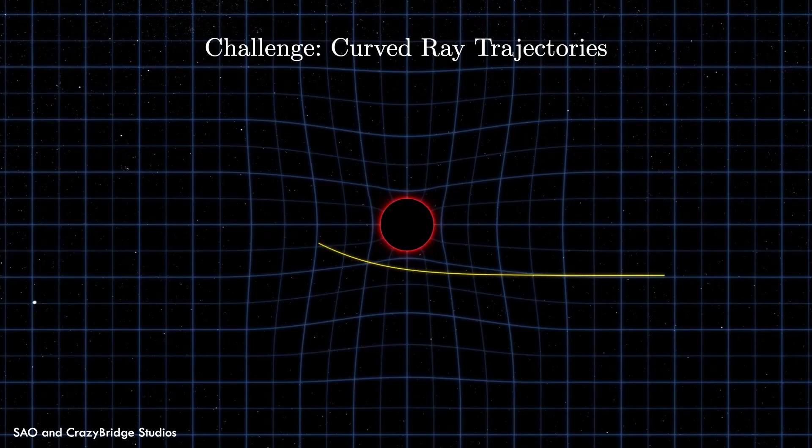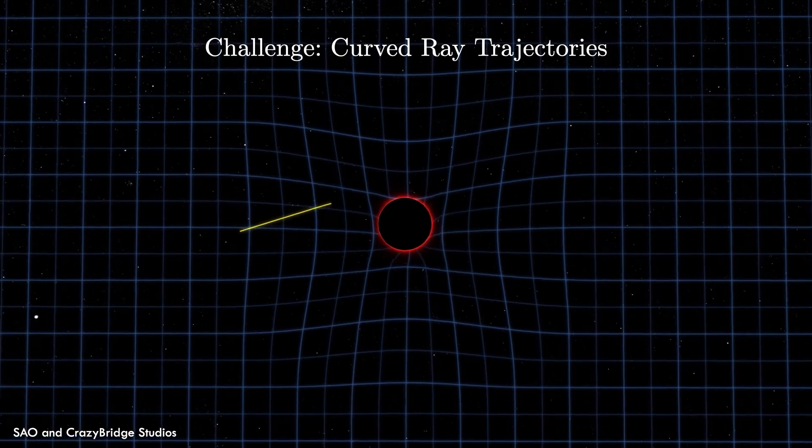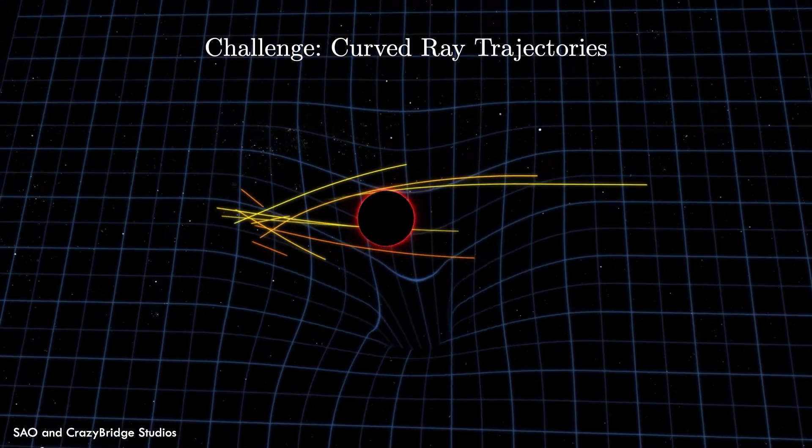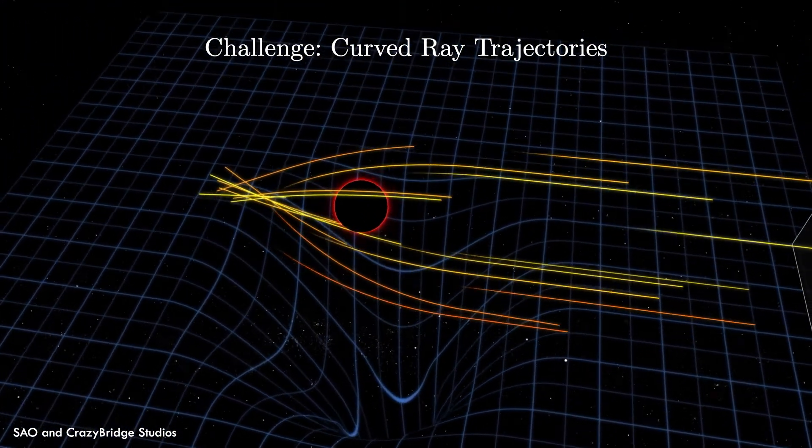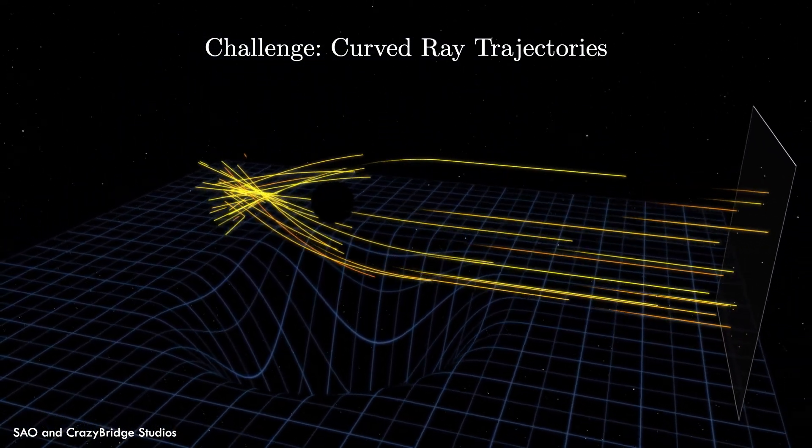The first challenge is that our observations are not projections along straight rays. Instead, ray trajectories are bent by the strong gravitational field.